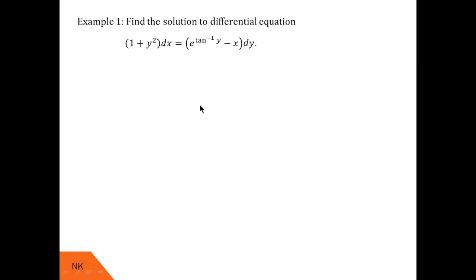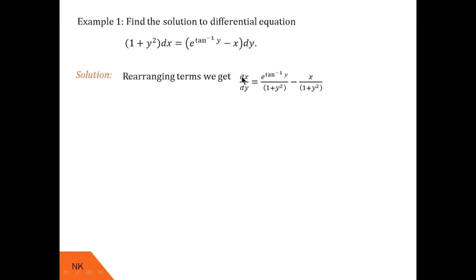Here, the given differential equation is (1 + y²) dx = (e^(tan⁻¹y) − x) dy. First, we will rearrange the terms. Taking dy to the left-hand side and (1 + y²) to the right-hand side, we get dx/dy = e^(tan⁻¹y) / (1 + y²) − x / (1 + y²).